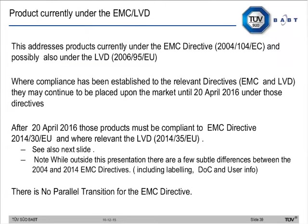For products currently under the EMC directive and LVD: where compliance has been established to the relevant 2004 or 2006 directives, they may continue to be placed on the market until the 20th of April 2016 under those directives. After that date, products must be compliant to the EMC directive 2014 version and, where relevant, the 2014 version of the LVD. There is no transition overlap — before that date they must meet the old EMC and LVD; after the 20th of April, they must meet the new ones.